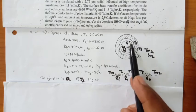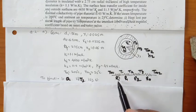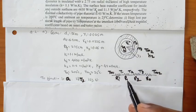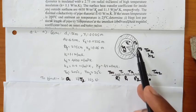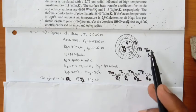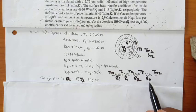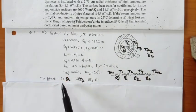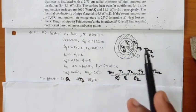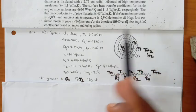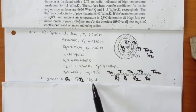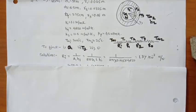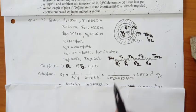From T∞1 to T1, heat is transferred by convection, giving thermal resistance Ri. From T1 to T2, heat is transferred through pipe material by conduction, giving resistance R1. From T2 to T3, heat is transferred through insulating material by conduction, giving resistance R2. From T3 to T∞2, heat is transferred by convection, giving resistance Ro. We need to find: heat loss Q, interface temperature T2, and overall heat transfer coefficient U based on inner and outer radius.